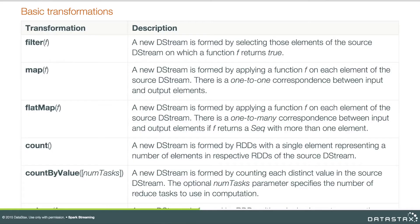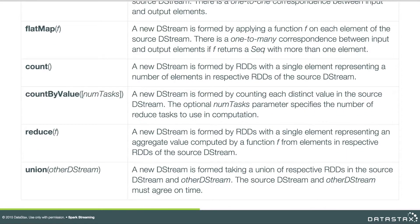We saw flatMap used before in our word count example, where we took a line of text and tokenized it on spaces. Count is now a transformation in Spark streaming — it takes every RDD, every batch in a D-Stream, counts up the elements in it, and produces a new RDD containing just that count. Count by value does a similar thing, except it takes distinct values in the source RDD and counts them, creating an RDD with a record for each distinct value and a count for that value. Reduce will apply a function to every element in the input, producing an aggregate in the output RDD. Finally, union, which is a binary operation, will take another RDD and produce an output RDD that is the union of that batch in the source RDD with the other RDD you pass into union.